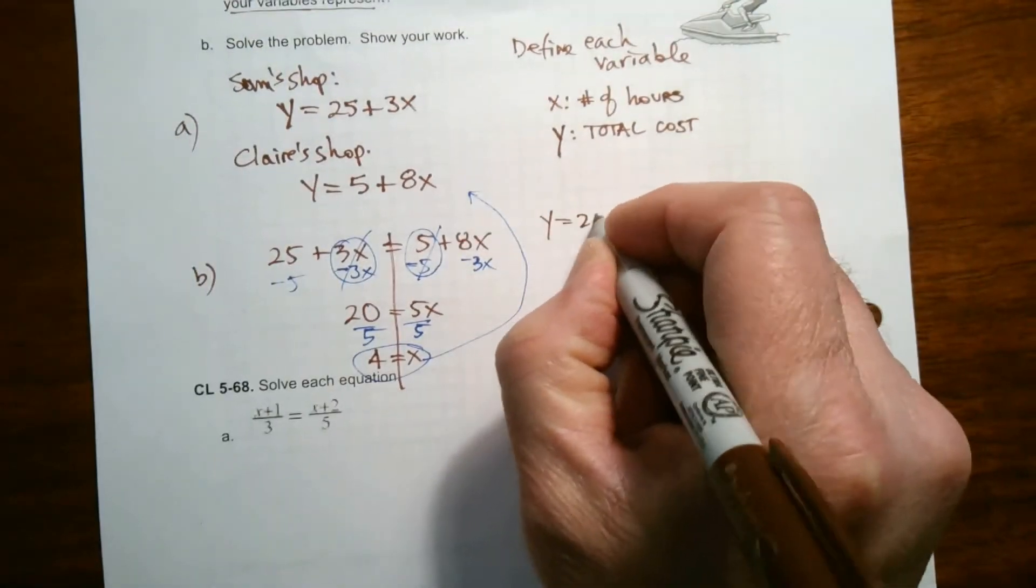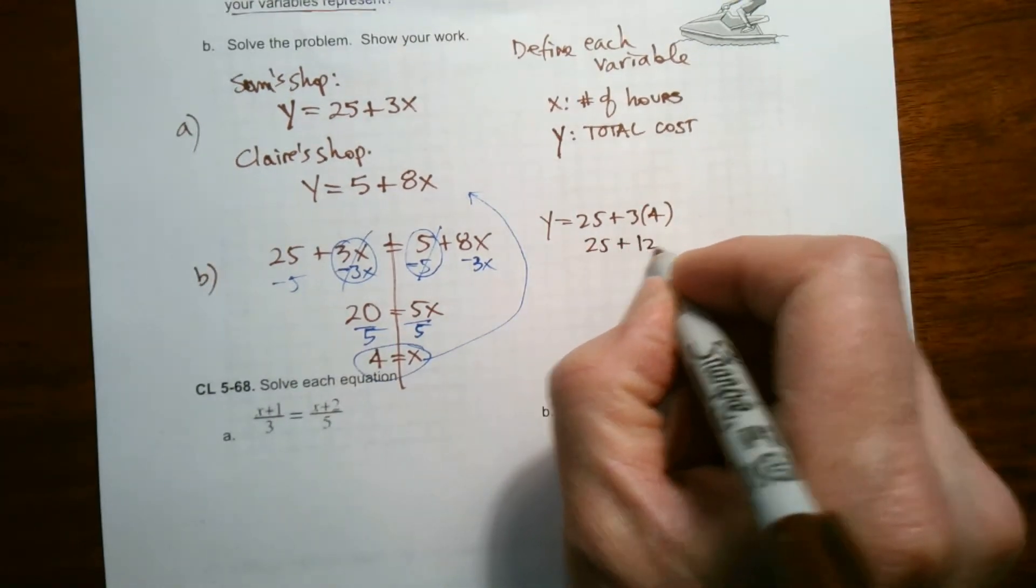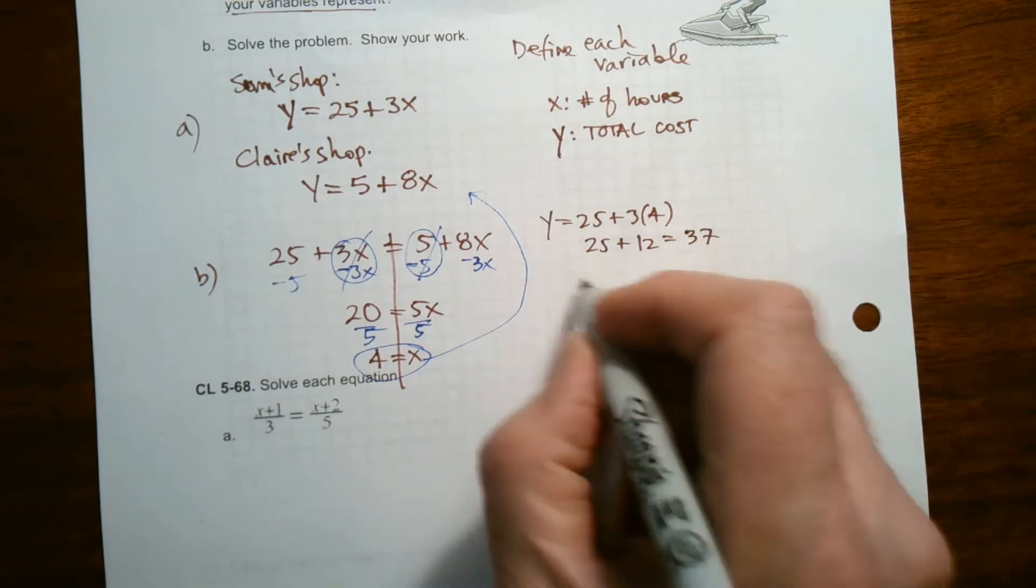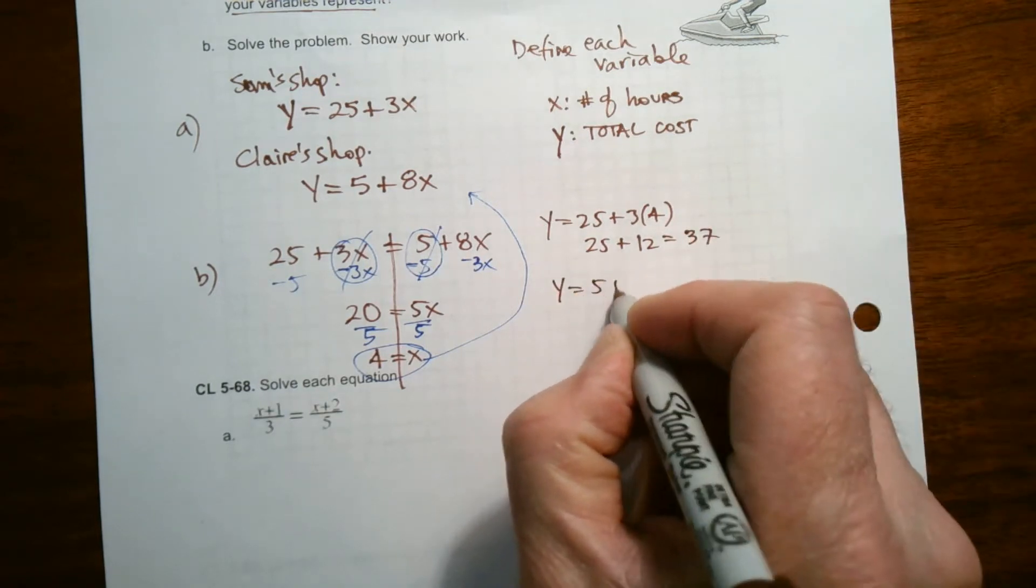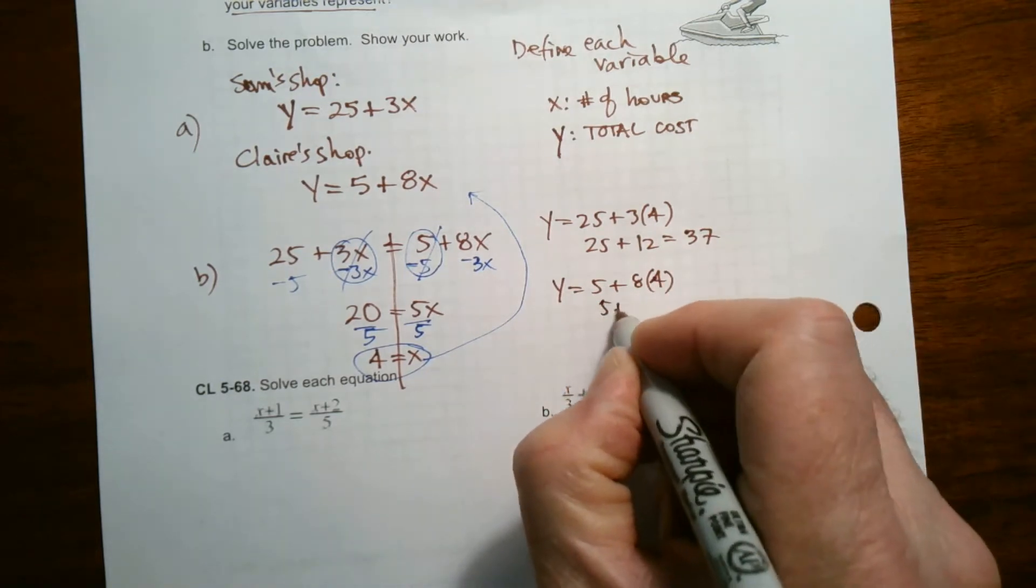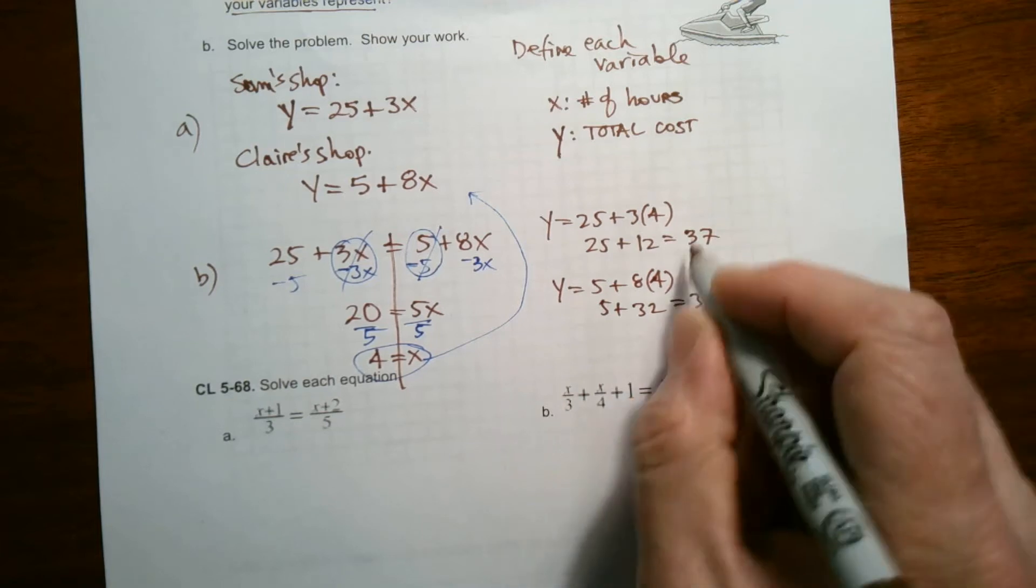So Y equals 25 plus three times four. Well, that's 25 plus 12, which is equal to 37. Okay. So let's check the other one. Y equals five plus eight times four. So that's five plus eight times four is 32. Five plus 32 is equal to 37. So sure enough, that's true.